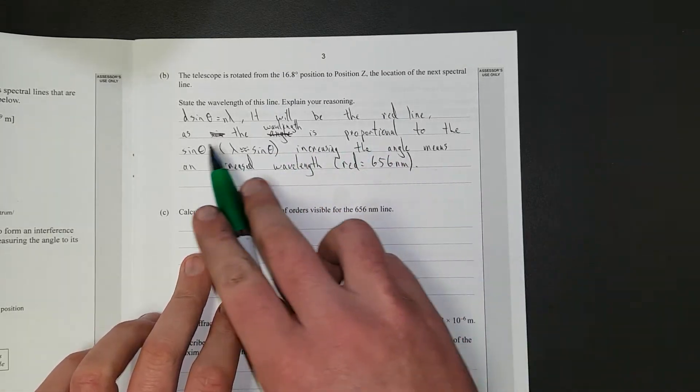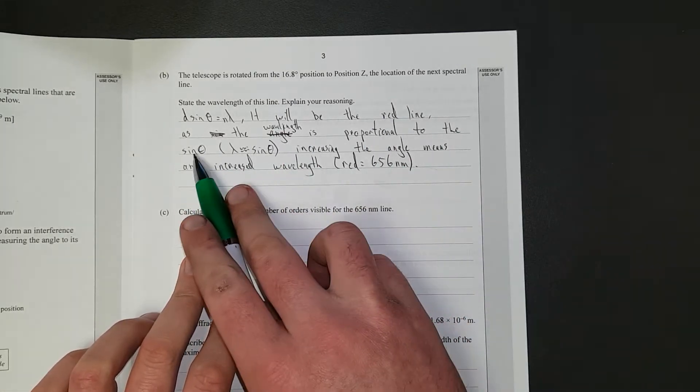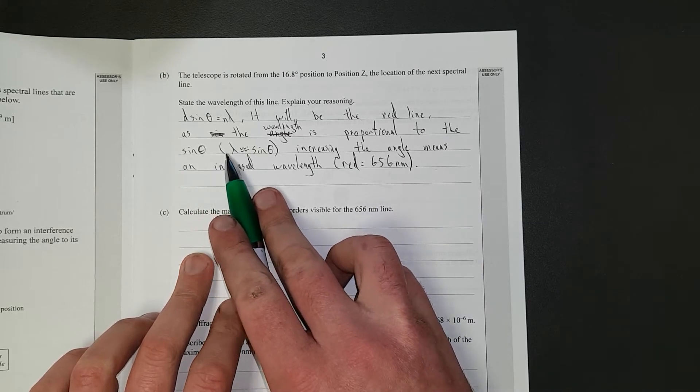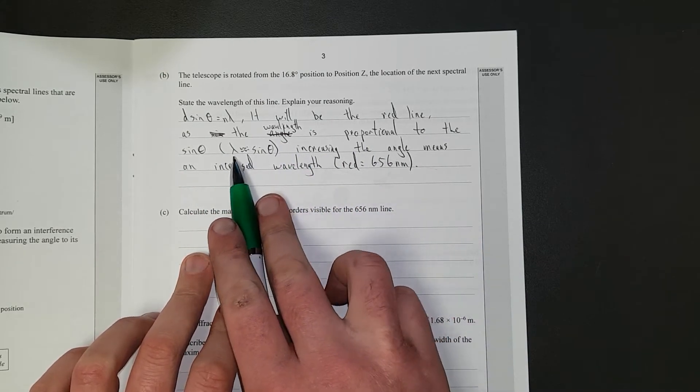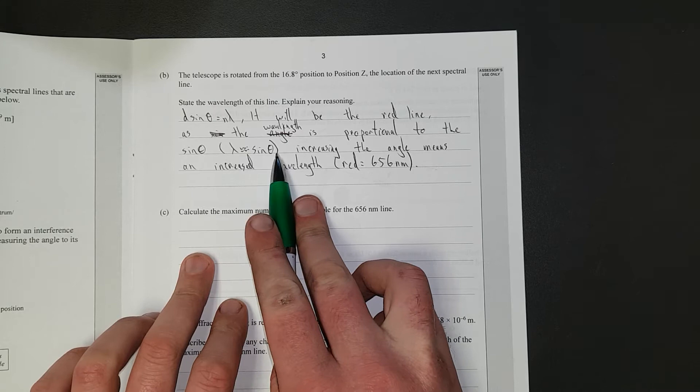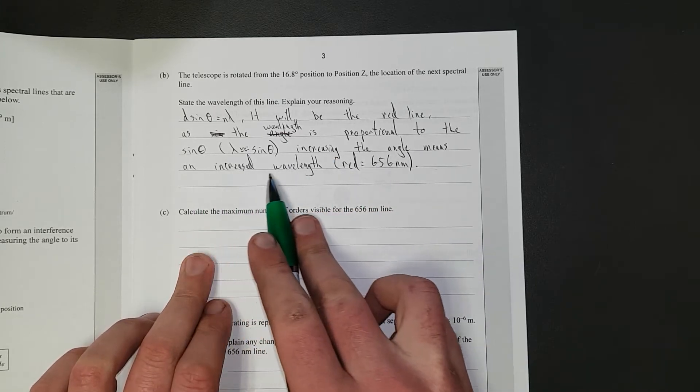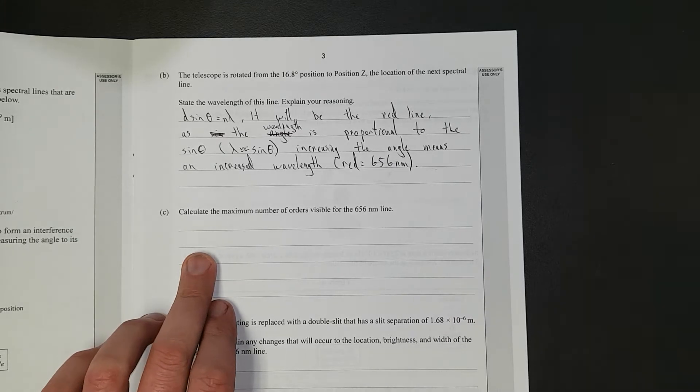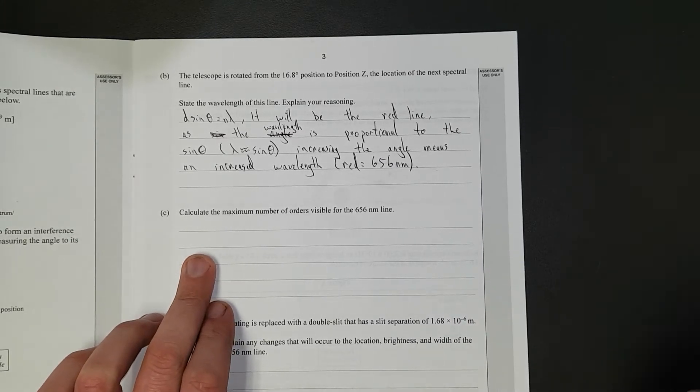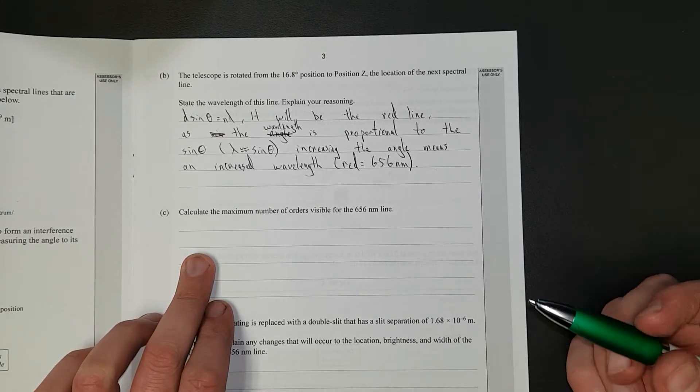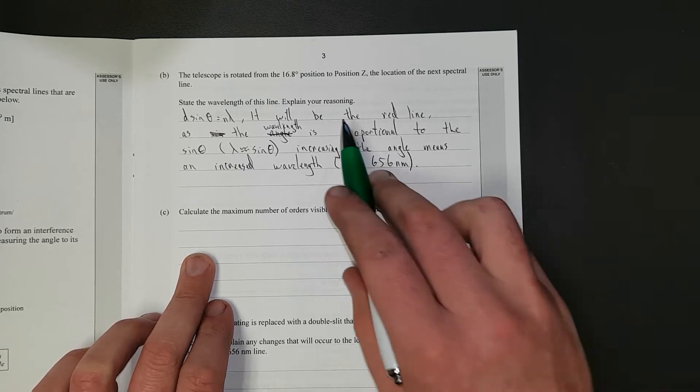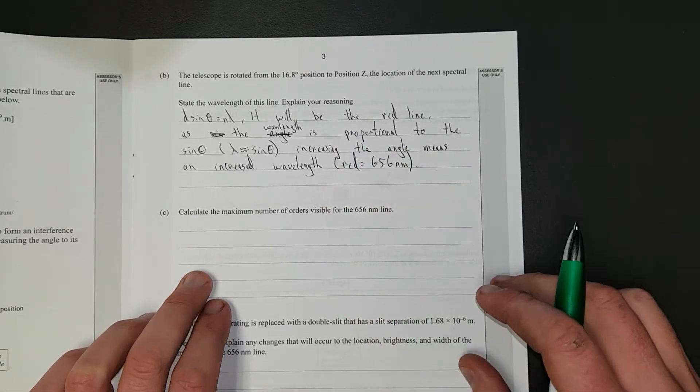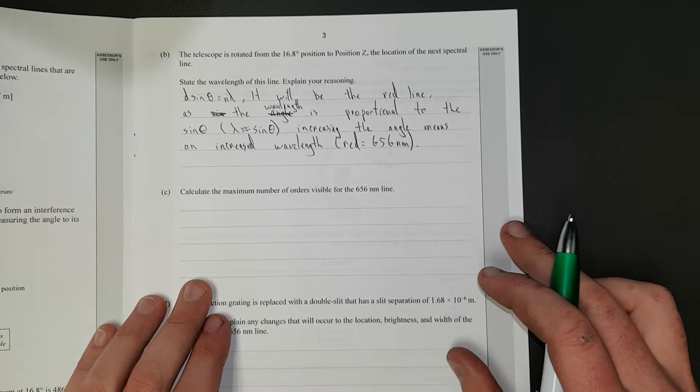You had to say, as the wavelength is proportional to sine theta, in other words, the wavelength is proportional to sine theta. Increasing the angle means an increased wavelength. If you just said it's closer to the slit size, thus it'll diffract more, you only got achieved. And if you didn't say it was red, you got not achieved, which sucks for you, but anyway.